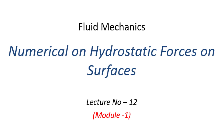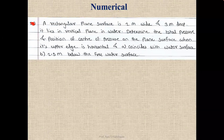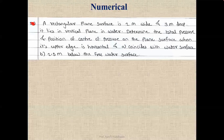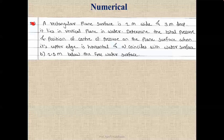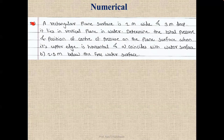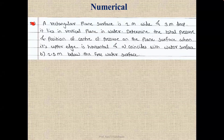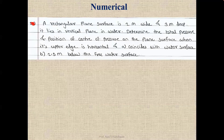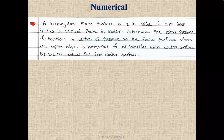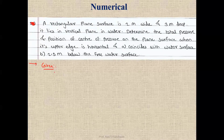Hello friends, in this lecture we will solve a few numericals based on hydrostatic forces acting on vertical planes. The first problem: a rectangular plane surface is 2 meters wide and 3 meters deep. It lies in a vertical plane in water (density = 1000 kg/m³). Determine the total pressure and position of center of pressure when the upper edge coincides with the water surface (Case 1) and when the upper edge is 2.5 meters below the free water surface (Case 2).